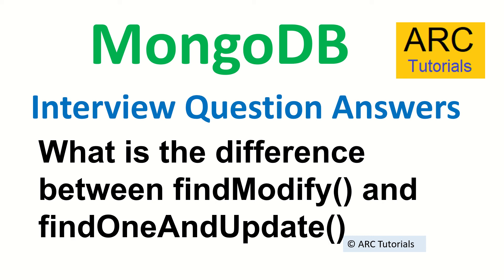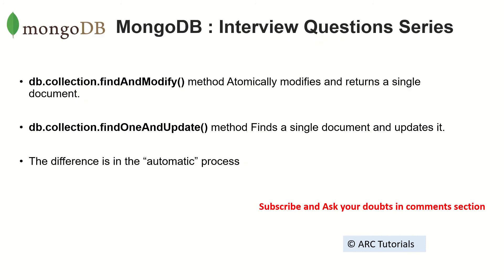Let's see the answer. The findAndModify method automatically modifies and returns a single document, whereas findOneAndUpdate will first find a single document and then update it.